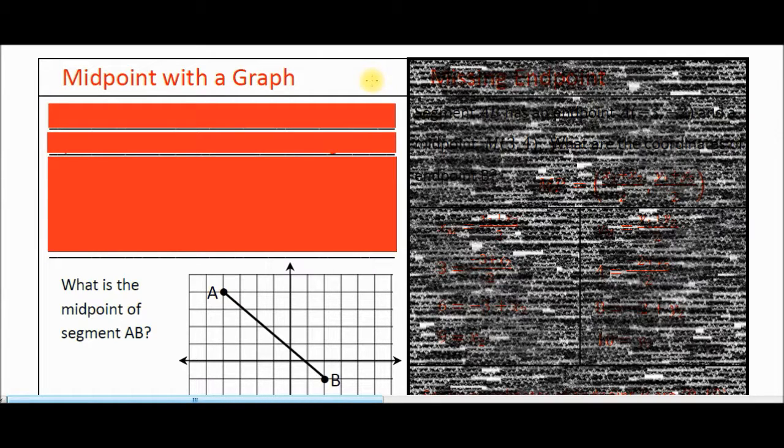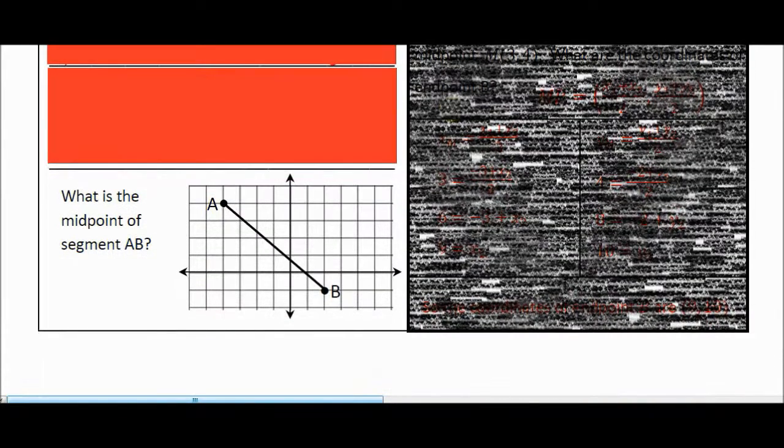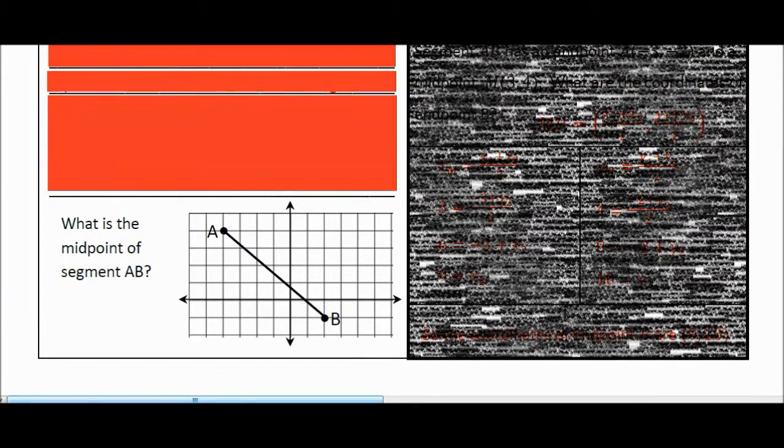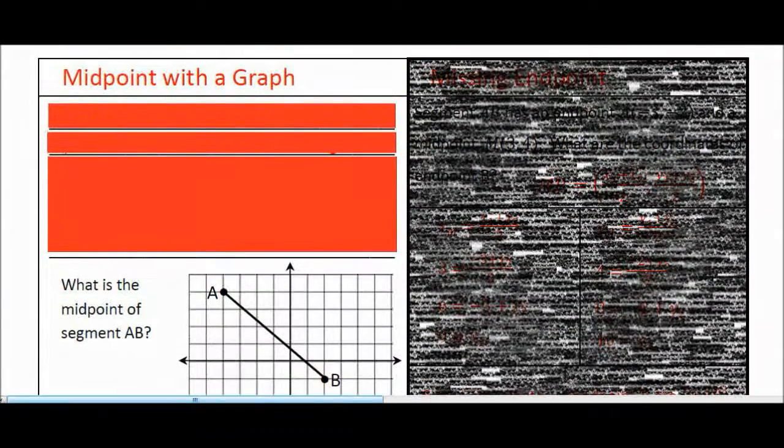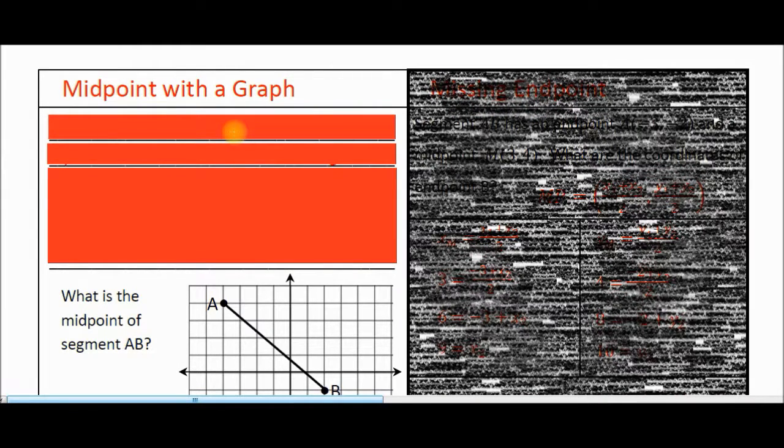Now, you don't have to use this method. You can use the midpoint formula. If you take a look at this graph and just figure out the coordinates for A, that'd be negative four, positive four, and B is positive two, negative one. You can just plug those coordinates in the midpoint formula, and you'd be fine. But there's a little faster way when the points are on a graph. I'm going to show you these steps.